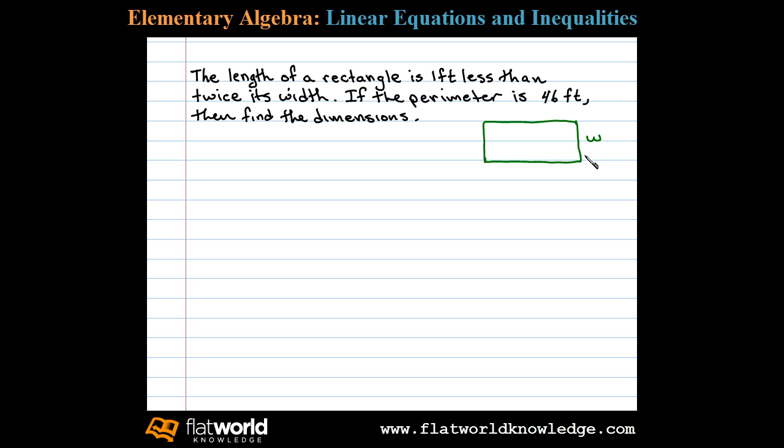Now it says the length of the rectangle is one foot less than twice the width, so the length is 2W. That's twice the width, but it's one foot less than that, so 2W minus 1 represents one foot less than twice the width.